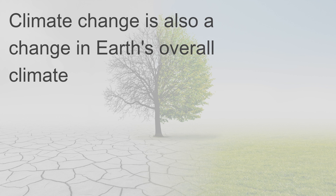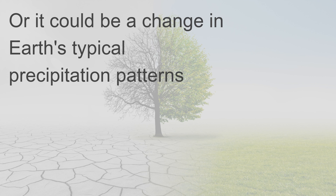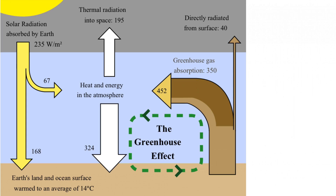Climate change is also a change in Earth's overall climate. This could be a change in Earth's average temperature or a change in Earth's typical precipitation patterns. The greenhouse effect schematic shows energy flows between space, the atmosphere, and the Earth's surface, with energy exchanges expressed in watts per square meter.